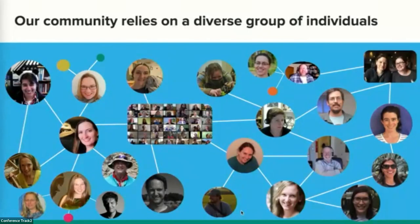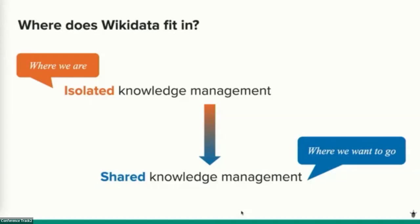Central to the community of practice concept is the idea that knowledge is a critical asset needing strategic management, and social structures provide more success than information systems alone. We recognized early on that the diversity of individuals in our working group was a strength. During our regular meetings, we kept returning to an unmet need for shared access to certain kinds of data, especially related to people and collecting sites.